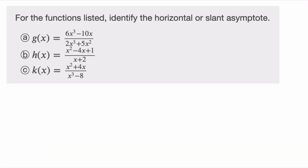Let's look at some examples. For part A, g(x) equals six x cubed minus 10x over two x cubed plus five x squared. To determine horizontal asymptotes, compare the degree of the numerator to the degree of the denominator. In part A, the degree of the numerator is three and the degree of the denominator is three — they are exactly the same. Therefore, there is a horizontal asymptote: y equals the ratio of the leading coefficients, so y equals six over two, which simplifies to y equals three. For asymptotes, always write y equals for horizontal asymptotes and x equals for vertical asymptotes, because they are lines.